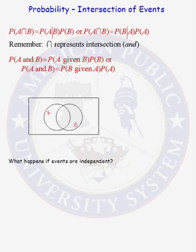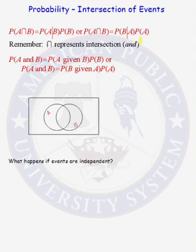In this problem, we will find the probability of the intersection of two events. The probability of A intersect B is equal to the probability of A given that event B occurred, times the probability of event B occurring. Or, the probability of A intersect B is the probability that event B occurs given that event A has already occurred, times the probability of event A.